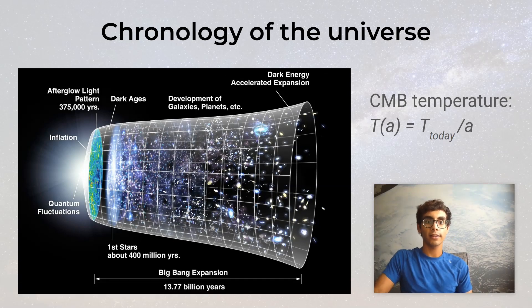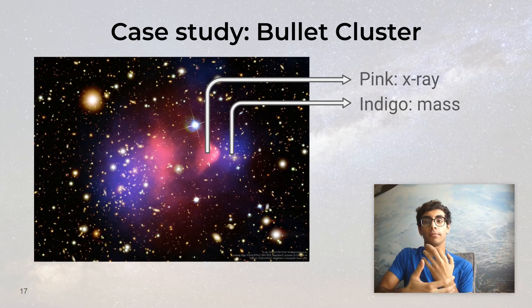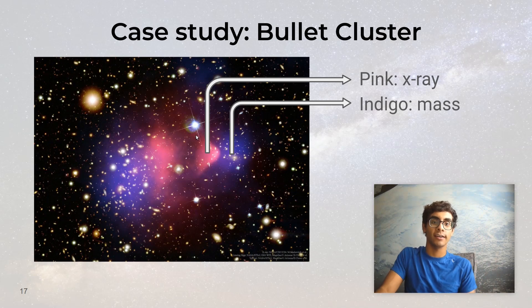Finally, let's end with a case study. This is the bullet cluster, which is actually two galaxy clusters which have collided head on with each other. The name bullet basically comes from this image, which on the right hand side sort of looks like a pink bullet flying through space, if you're imaginative enough.